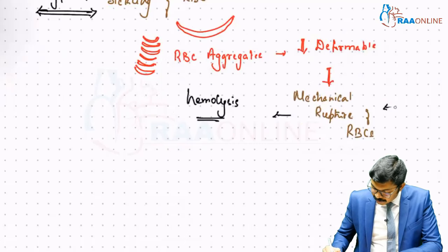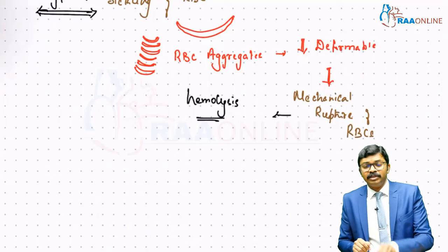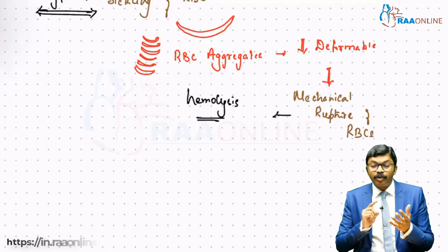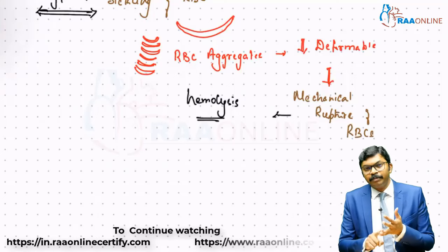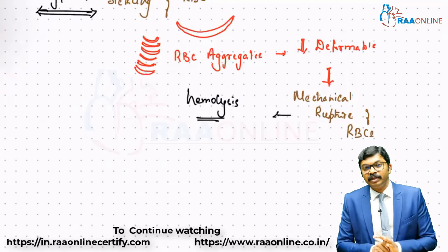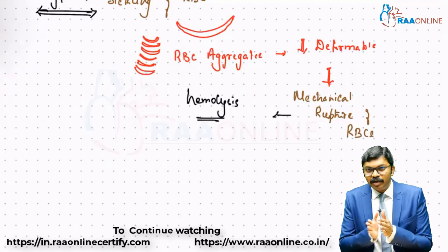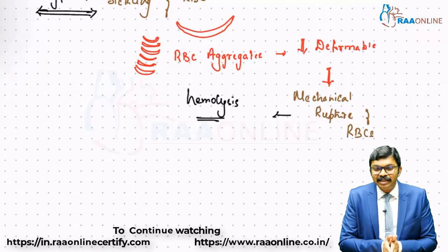And that is sickle cell anemia. So under hemolysis, you are going to write three conditions. Number one, hereditary spherocytosis. Number two, G6PD deficiency. Number three, sickle cell anemia. These are all hemolysis because of intrinsic RBC defect.